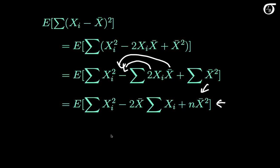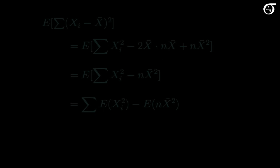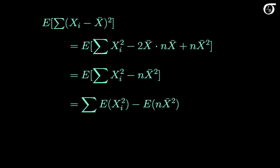Note that x bar is the sum of x sub i over n, so the sum of x sub i is simply n times x bar. The middle term therefore works out to 2n times x bar squared, and overall we are left with the sum of x sub i squared minus n times x bar squared.